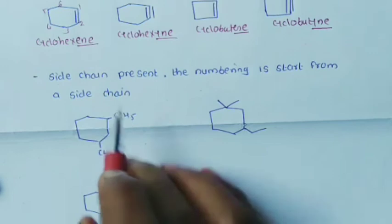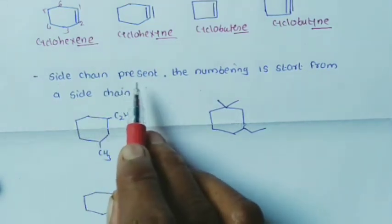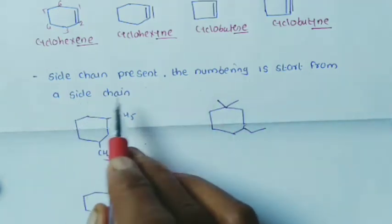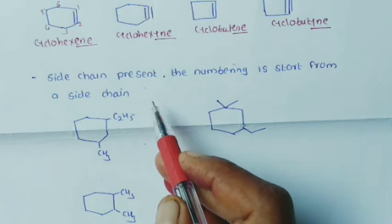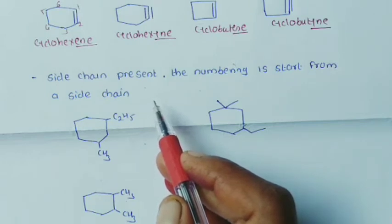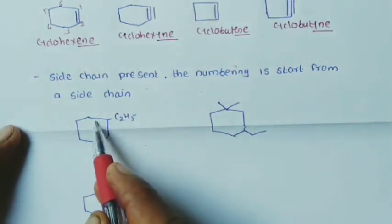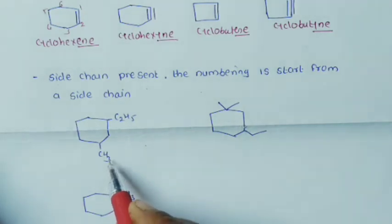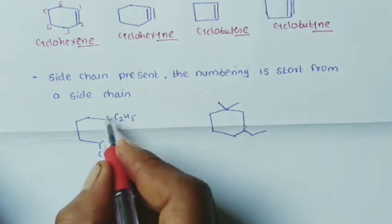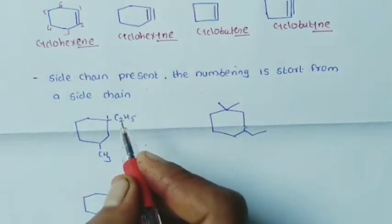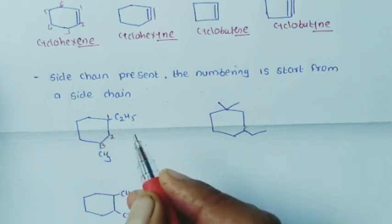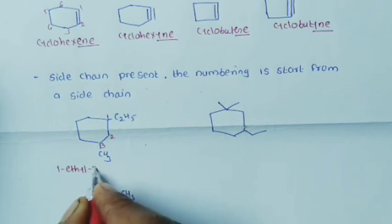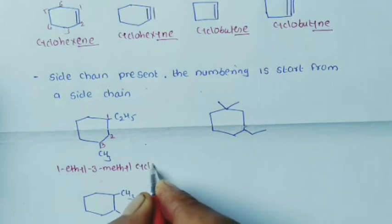The third rule: if a side chain is present in the cyclic compound, numbering starts from the carbon bearing the side chain, which is assigned the number 1. For example, a cyclohexane ring with a C2H5 (ethyl) group and a CH3 (methyl) group: the largest alkyl substituent, ethyl (C2H5), is at carbon 1. Numbering around the ring gives carbon 3 for the methyl group. The IUPAC name is 1-ethyl-3-methylcyclohexane.